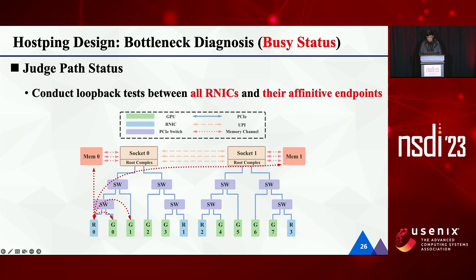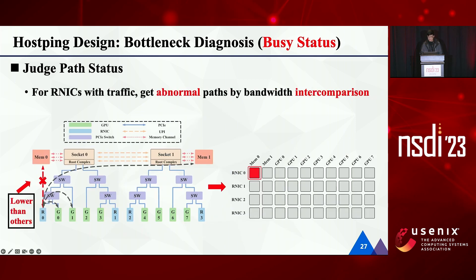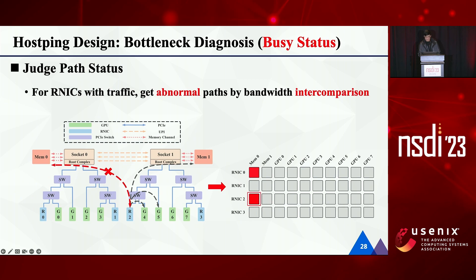Next, we will introduce how HostPing diagnoses intra-host bottlenecks when the host is busy with services. When triggered by abnormal counters on R-NICs, HostPing only conducts loopback tests between all R-NICs and their affinity endpoints to reduce overhead to intra-host services. When the host is busy, some R-NICs — especially the abnormal ones — may have service traffic, so path bandwidth measured by these R-NICs will degrade due to contention with service traffic. Therefore, HostPing cannot judge the status of these paths according to the baseline. However, these R-NICs could still indicate abnormal paths by inter-comparison. Among the R-NIC's affinity endpoints, if the measured path bandwidth to one endpoint is significantly lower than that to others, HostPing infers this path as abnormal. For other loaded R-NICs, we can repeat this process to get abnormal paths.